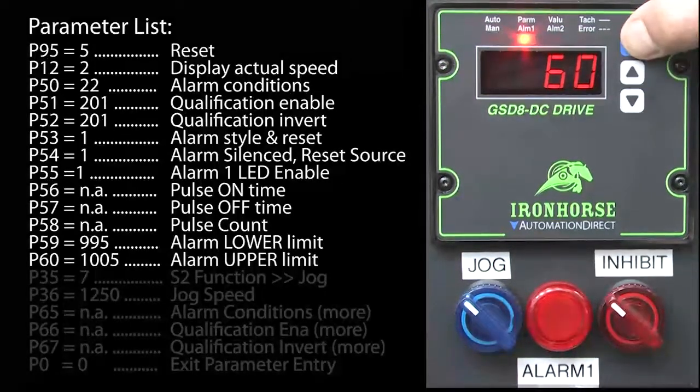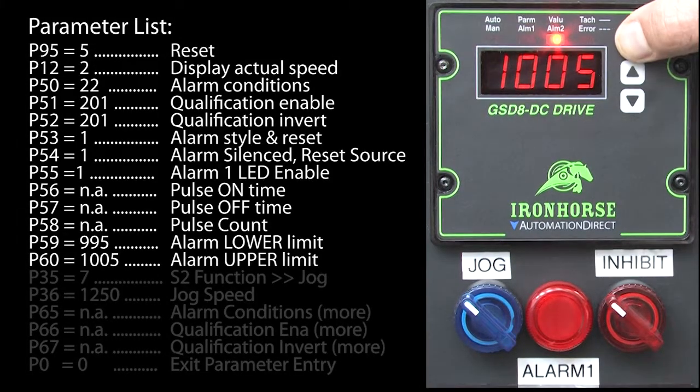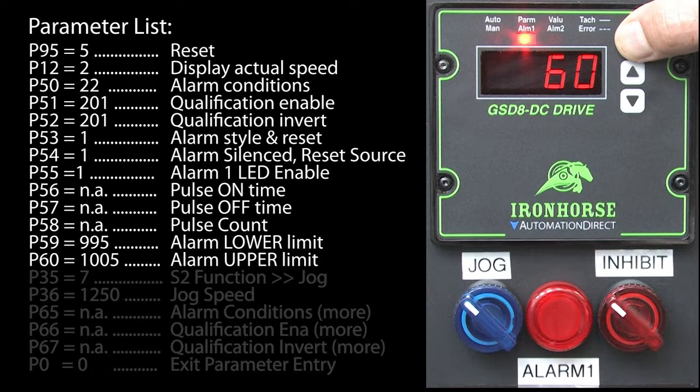And parameter 60 is the upper limit so let's make that 1005 RPM. So anything outside that range should give us an alarm if we aren't ramping up to speed, at zero speed, inhibited or jogging.